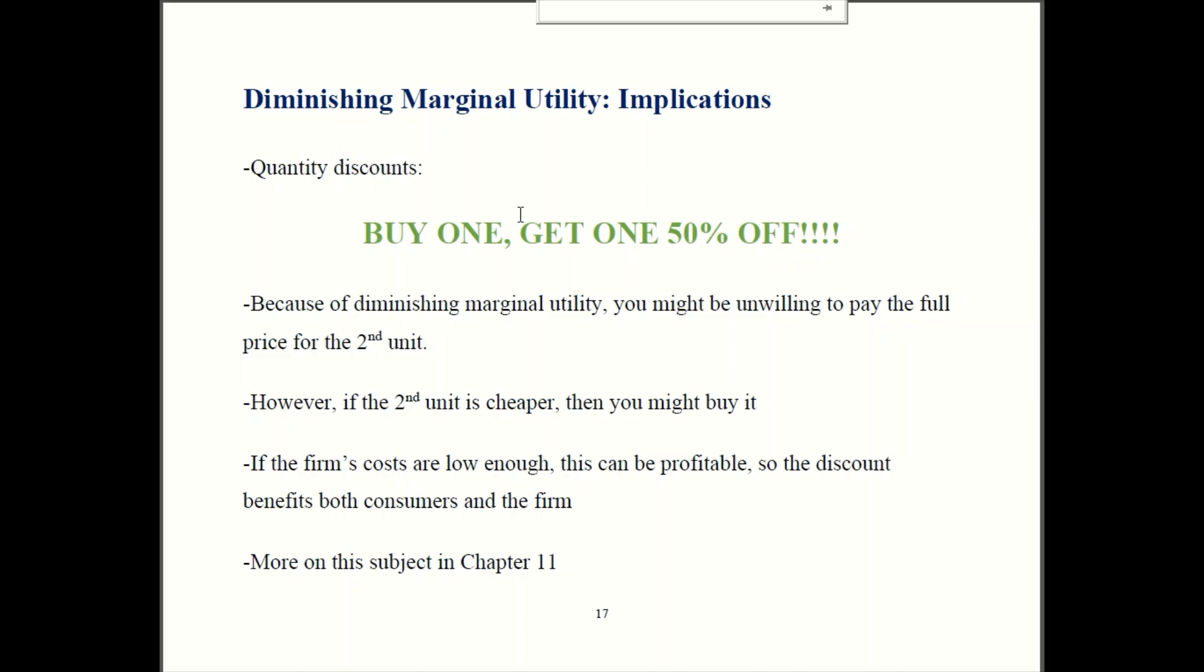Now it's not always going to work out, but if it's still profitable to sell a discount and you get people to buy extra units by enticing them with these discounts, then it could be better for both the firm and the consumer to have these discounts. So that's a little bit of an idea of what you'll see later on. We'll talk more about this in chapter 11, but its roots come from diminishing marginal utility.